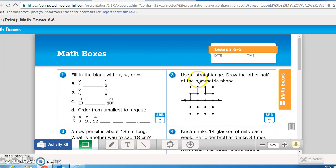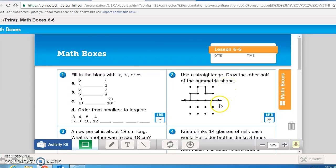Math box two tells you to use a straight edge. So please get out something to use as a straight edge. Then draw the other half of the symmetric shape. So you need to draw the other half in the lower box here. Pause the recording now and do number two.